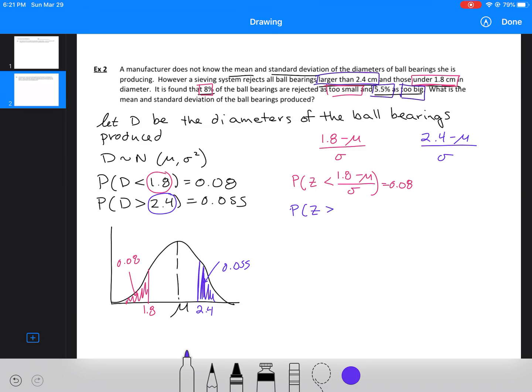My second variable, however, is I've got the probability that Z is greater than (2.4 - μ)/σ equals 0.055. That one I am going to have to flip so that it is less than. So I've got P(Z < (2.4 - μ)/σ) = 0.945. Remember that this new area is just 1 minus the area of that original blue section.